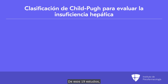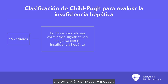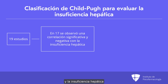Among those 19 studies, 17 demonstrated a significant and negative correlation — with a correlation coefficient between 0.5 and 1 — between oral drug clearance and hepatic impairment as defined by Child-Pugh.